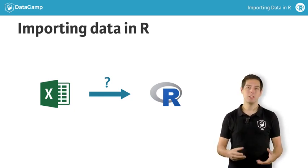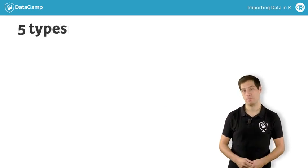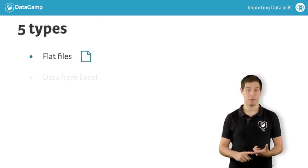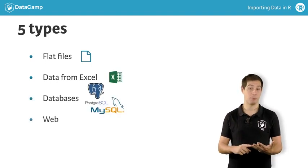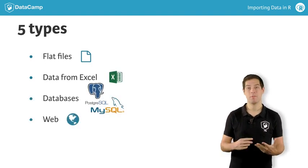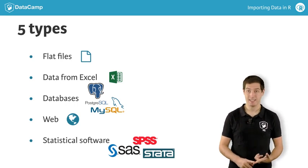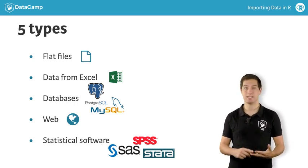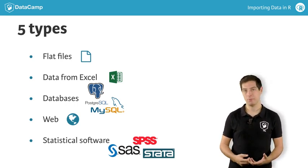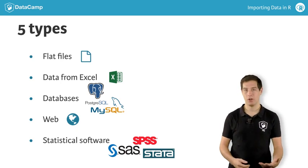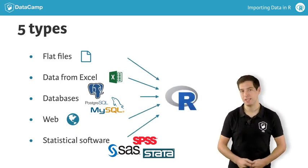In this two-part course, we will focus on five types of data: data from flat files, data from Excel, data from databases, data from the web, and finally data from other statistical software like SAS, SPSS and Stata. You'll learn to convert each data format, one after the other, into an R dataframe, ready to do some fancy analyses.